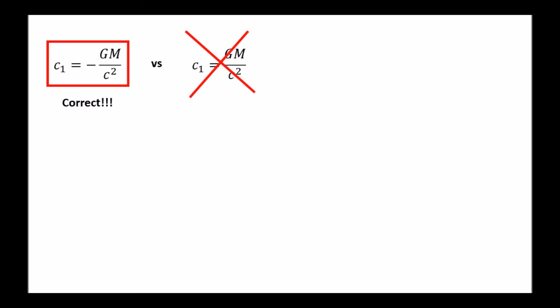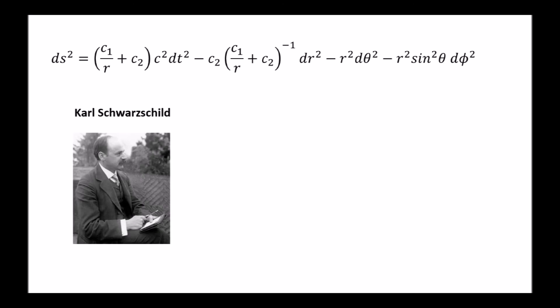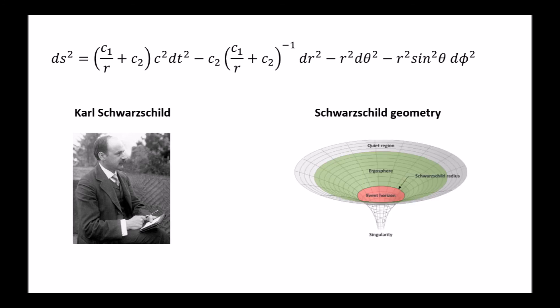So, in conclusion, we have derived the time-independent spacetime distance for a spherically symmetric object in vacuum. This result was first obtained by Karl Schwarzschild while fighting in the trenches during World War I. Pretty impressive, eh? Deservedly, this spacetime geometry is called Schwarzschild geometry.